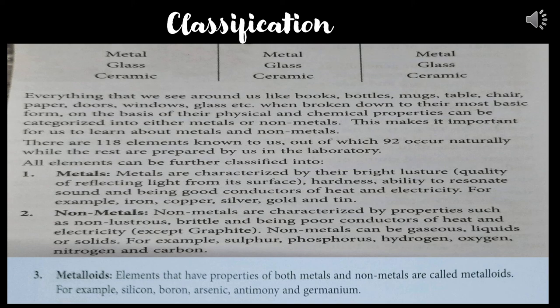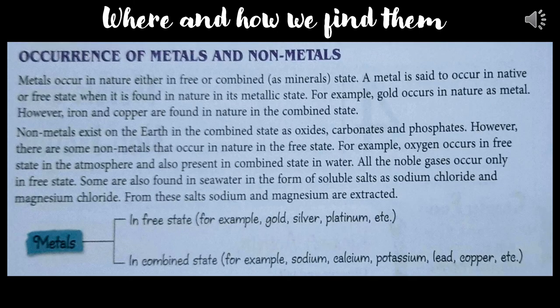Before studying the properties, we should understand the occurrence of metals and nonmetals. Metals occur in nature in either free or combined/mineral state. A metal is said to occur in native or free state when found in nature in its metallic form — for example, gold. However, iron and copper are found in a combined state.